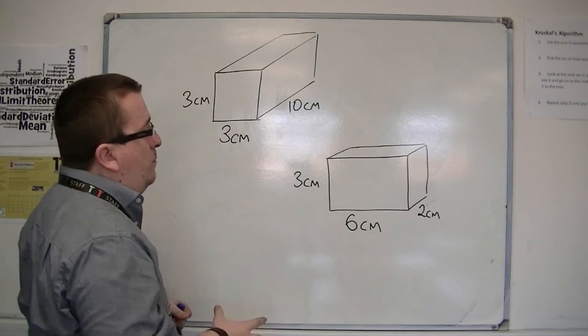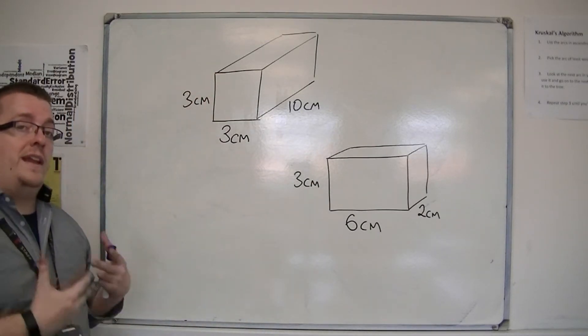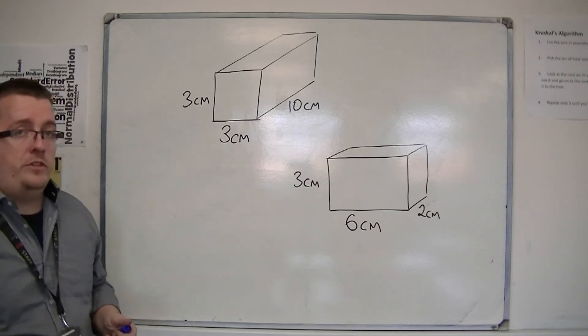So we've got two cuboids here, and we want to work out the volume for each of them. The calculation is very straightforward.